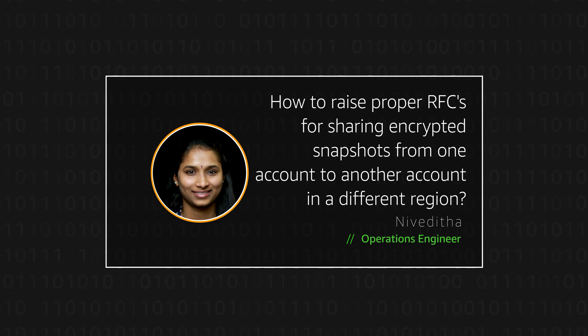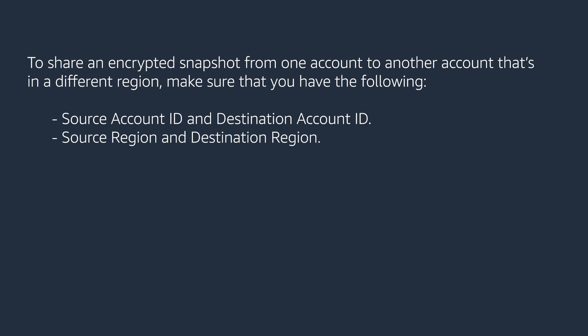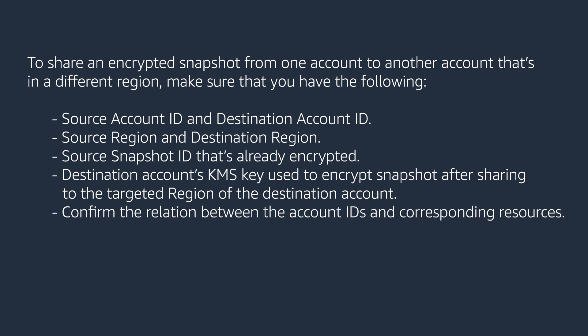Let's get started. To share an encrypted snapshot from one account to another account that's in a different region, make sure you have the following: source account ID and destination account ID, source region and destination region, source snapshot ID that's already encrypted, and the destination account's KMS key used to encrypt the snapshot after sharing to the targeted region of the destination account. Confirm the relation between the account IDs and corresponding resources.